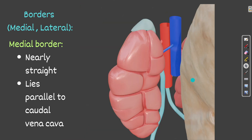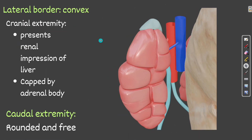The right kidney has two borders: medial and lateral. The medial border is nearly straight and lies parallel to the caudal vena cava. The lateral border is convex. These two borders define the sides of the right kidney.